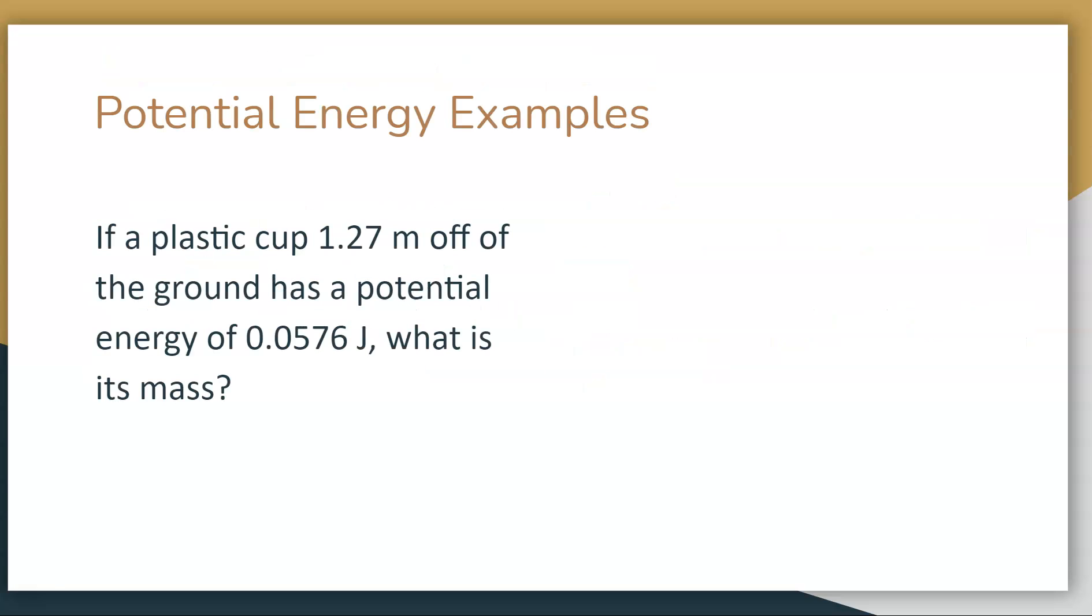I have a plastic cup 1.27 meters off the ground with a potential energy of 0.0576 joules. What is its mass? We have to think about what it's asking: mass. So I need to rearrange this formula. Lucky for us, M, G, and H are all multiplied together, so it's one easy step. We divide by the other two constants that we don't want on one side. So we divide by G and H, get rid of them, and put them on the other side of the equation.